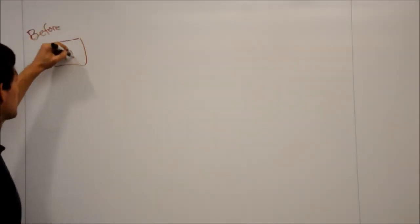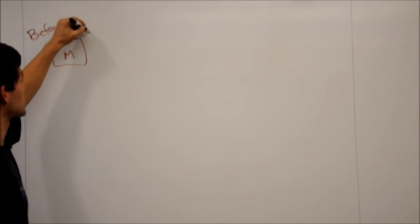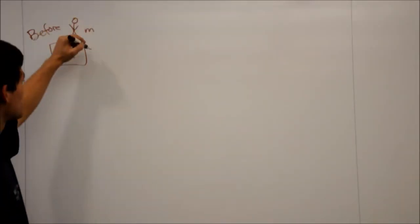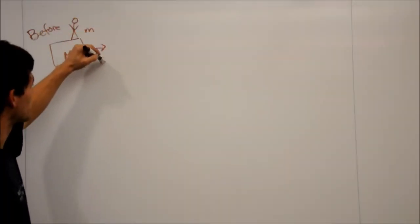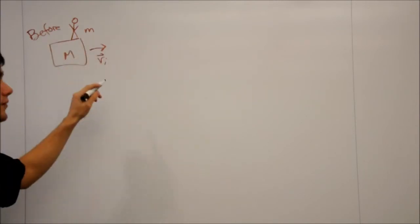In this case we have a cart of mass big M, with a man of mass little m standing on top of it. And both of them are moving to the right with speed VI, standing for V initial.